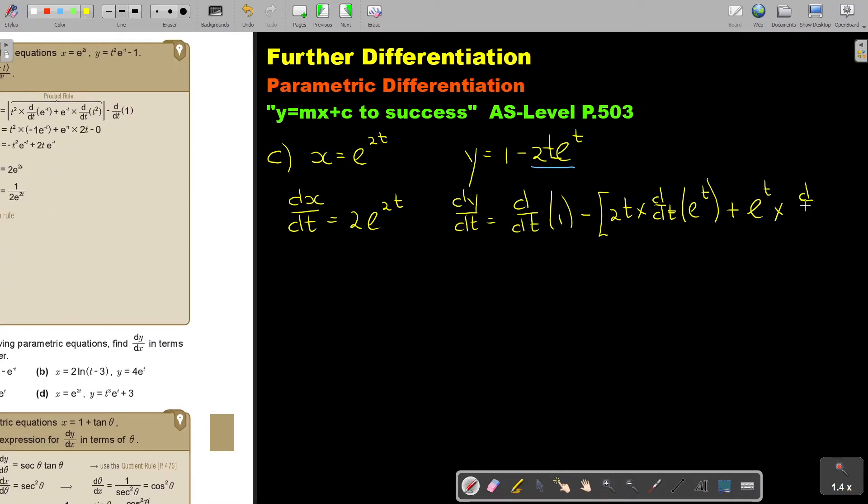And multiply the first one. So d over dt. And that will be 2t. Remember, the negative is there. And that's the end of my product rule.